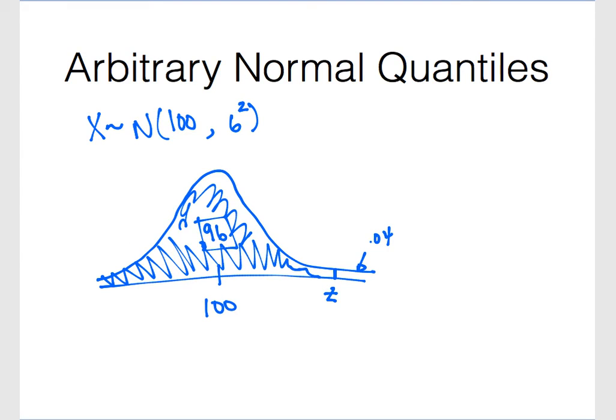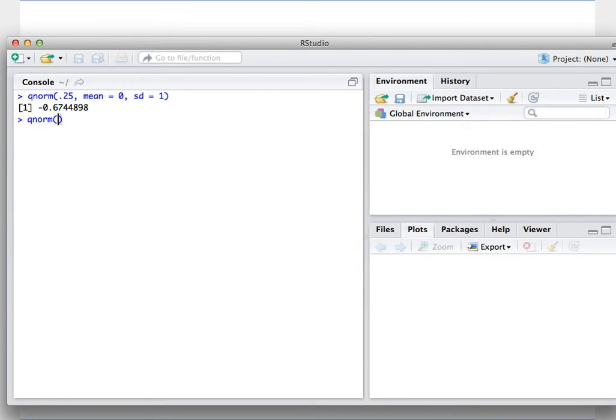And again, we use the qnorm function in R. So this time, we'll use qnorm. We're looking for the 0.96 quantile. We have a mean of 100 and a standard deviation of 6.